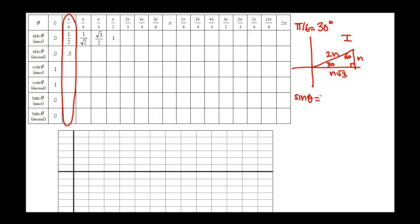Then I'll calculate the sine of the angle, which is y over r, my y side over my hypotenuse, so n over 2n, which is 1 half.